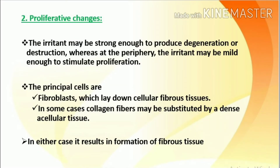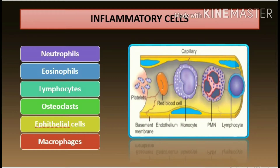Proliferative changes: the irritant may be strong enough to produce degeneration or destruction, whereas at the periphery the irritant may be mild enough to stimulate proliferation. The principal cells are fibroblasts, which lay down cellular fibrous tissues. In some cases collagen fibers may be substituted by a dense acellular tissue, resulting in formation of fibrous tissue. Inflammatory cells involved include neutrophils, eosinophils, lymphocytes, osteoclasts, epithelial cells, and macrophages.